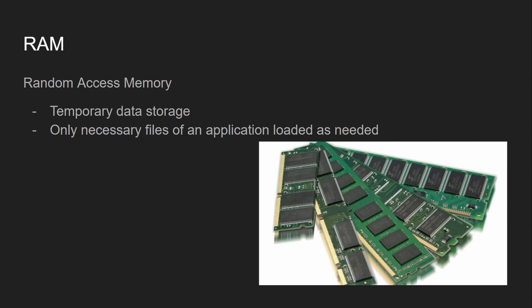RAM acts as a temporary workspace, allowing the processor to access and manipulate the required information efficiently. To understand this, we'll use the task of opening Microsoft Word as an example. Whenever you open an application such as Microsoft Word, only the necessary files and instructions are loaded into RAM initially, which allows for quick access and ensures smooth operation. All other documents saved on the computer are only loaded into RAM when the user opens them. These other files are saved in a storage device, which is part of the computer's secondary memory, until they're accessed by the user, in which case they're loaded into RAM.